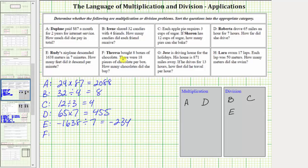For F, Teresa bought eight boxes of chocolates. There are 18 pieces of chocolate per box. How many chocolates did she buy? Well, because each box contains 18 pieces of chocolate, and she has eight boxes, eight times 18 gives us a total number of chocolates.